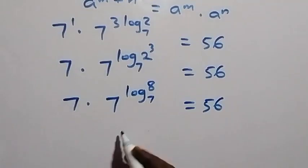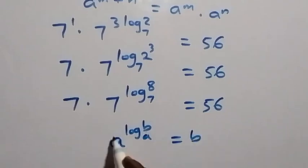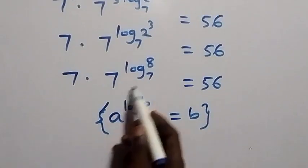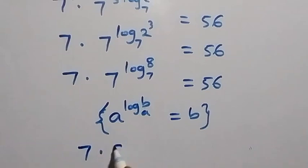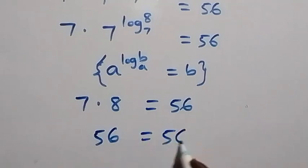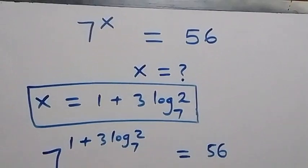Applying the log identity: a raised to power log_a(b) equals b. So 7 raised to power log₇8 equals 8. We then have 7 times 8 equals 56, and of course 7 times 8 is 56, which equals 56. Since the left-hand side equals the right-hand side, we conclude that x equals 1 plus 3·log₇2 satisfies this given problem.